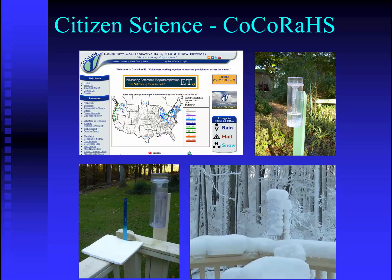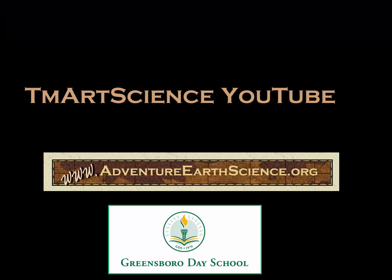If you're interested in the different types of precipitation, I'd encourage you to investigate a citizen science project known as CoCoRaHS — the Community Collaborative Rain, Hail, and Snow Network. You can find this online, and you can contribute measurements to a national and even international network of others who are interested in weather and tracking precipitation. In the next video, we'll take a look at air masses in the Earth's atmosphere. Thanks for watching, and have a great day.